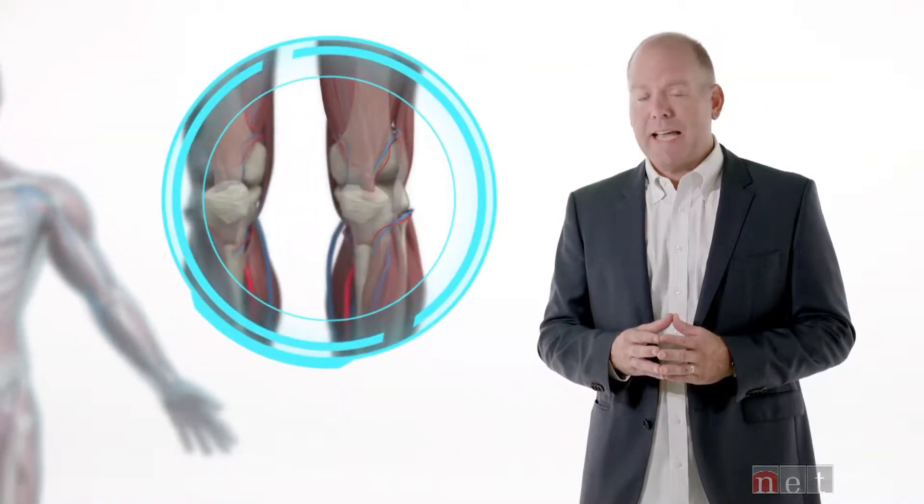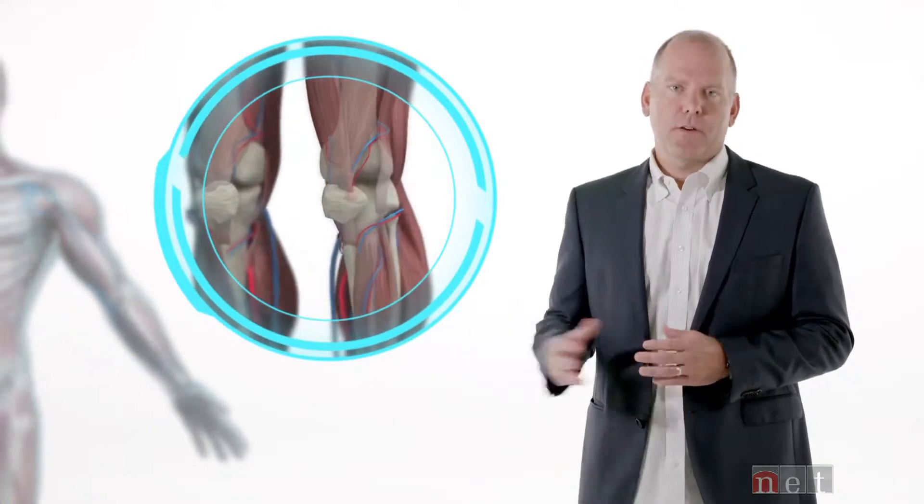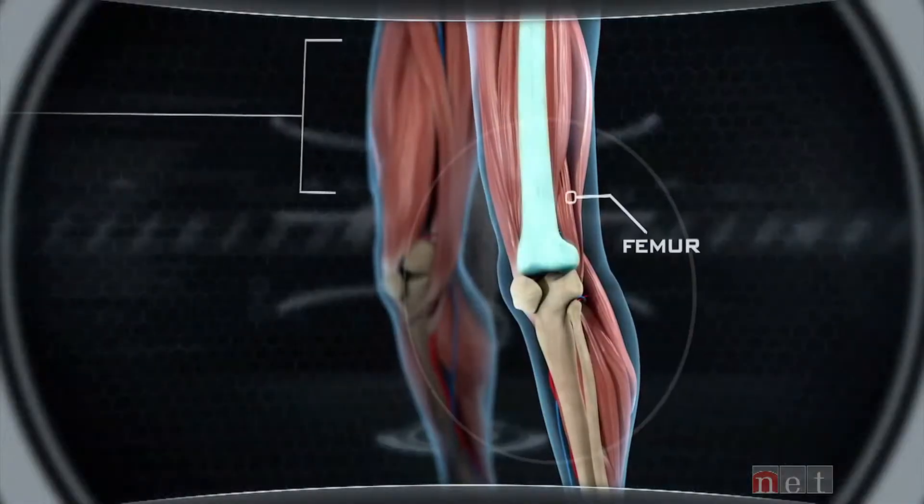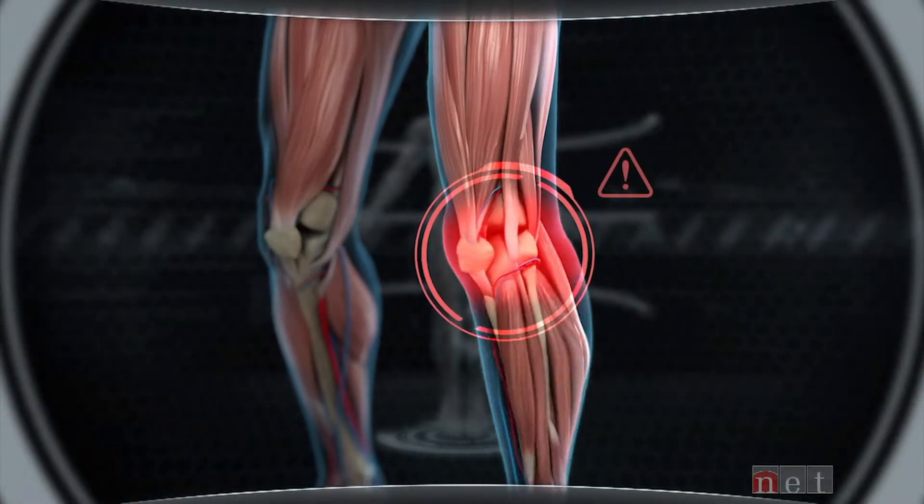The ACL gets its name from the Latin word cruciate or cross because the ACL crosses in the front part of the knee. It helps stabilize the femur to the tibia and prevents rotational movement and side-to-side movement of excess.